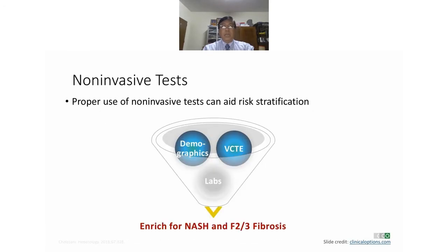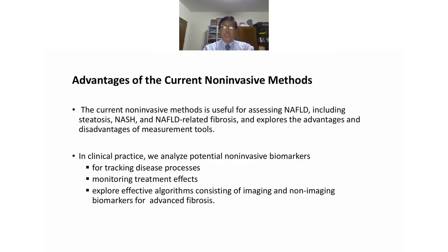For non-invasive tests, proper use can aid risk stratification using demographics, vibration-controlled transient elastography, or laboratory markers that enrich for the development of NASH and fibrosis. The current non-invasive methods are useful for assessing NAFLD including steatosis, NASH, and NAFLD-related fibrosis. In clinical practice, potential non-invasive biomarkers are used for tracking disease processes, monitoring treatment effects, and exploring effective algorithms consisting of imaging and non-imaging biomarkers for advanced fibrosis.